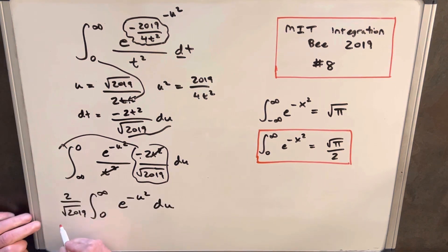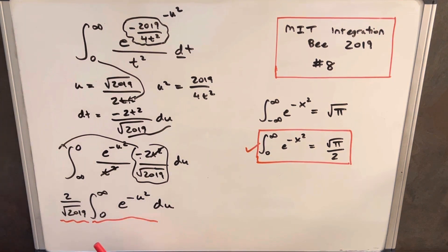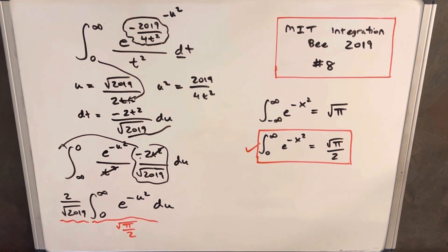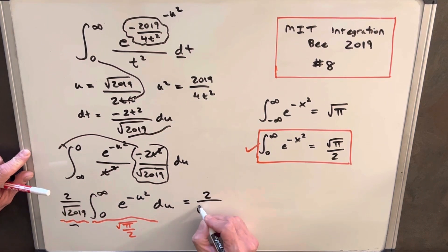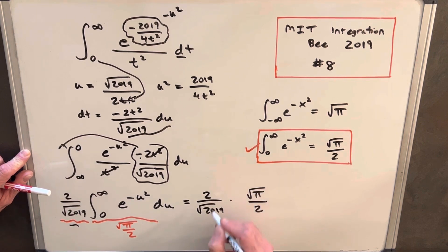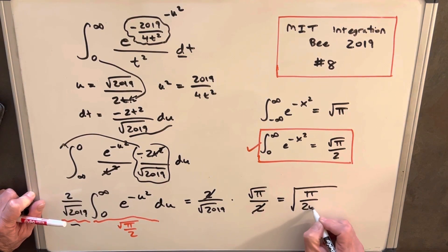So now we've brought all the constant values outside of the integral. You'll notice this integral now matches the Gaussian formula exactly — the variable name doesn't matter for a definite integral. So we know this integral equals square root of pi over 2. All we need to do is multiply: 2 over square root of 2019 times square root of pi over 2. The twos cancel, giving us a final answer of square root of pi over 2019.